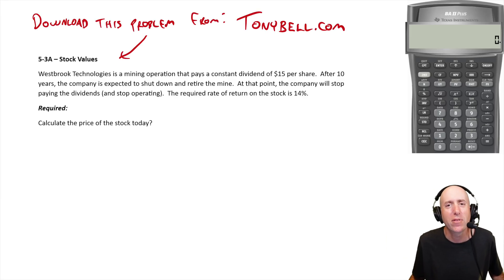Let's take a look at problem 53, a dividend discount model. This one's a little bit different in how it works because it's a company that's going to go out of business, so it doesn't go on forever. Westbrook Technologies is a mining operation and pays a constant dividend of $15 per share, so no growth rate on this dividend.